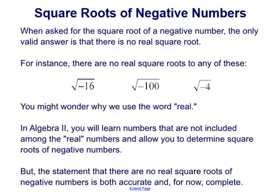There would be no real square root for the square root of negative 16, or the square root of negative 100, or the square root of negative 4. You might wonder why we use the word "real." In Algebra 2, you will learn numbers not included in the real number system that allow you to determine square roots of negative numbers. But the statement that there are no real square roots of negative numbers is both accurate and, for now, complete. We'll wait till Algebra 2 to explore that any further.